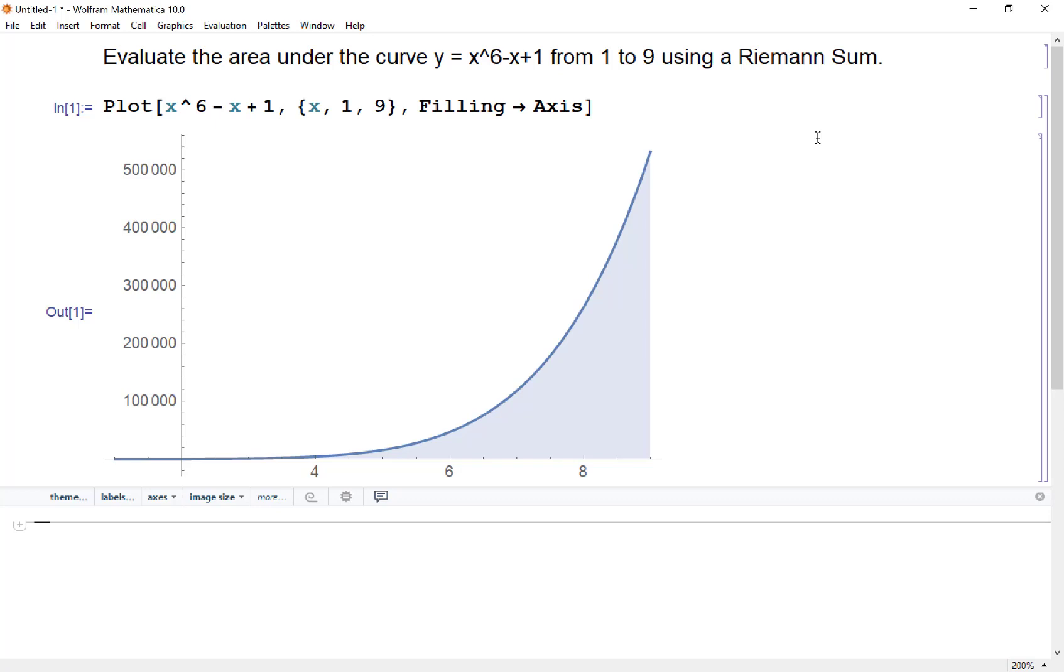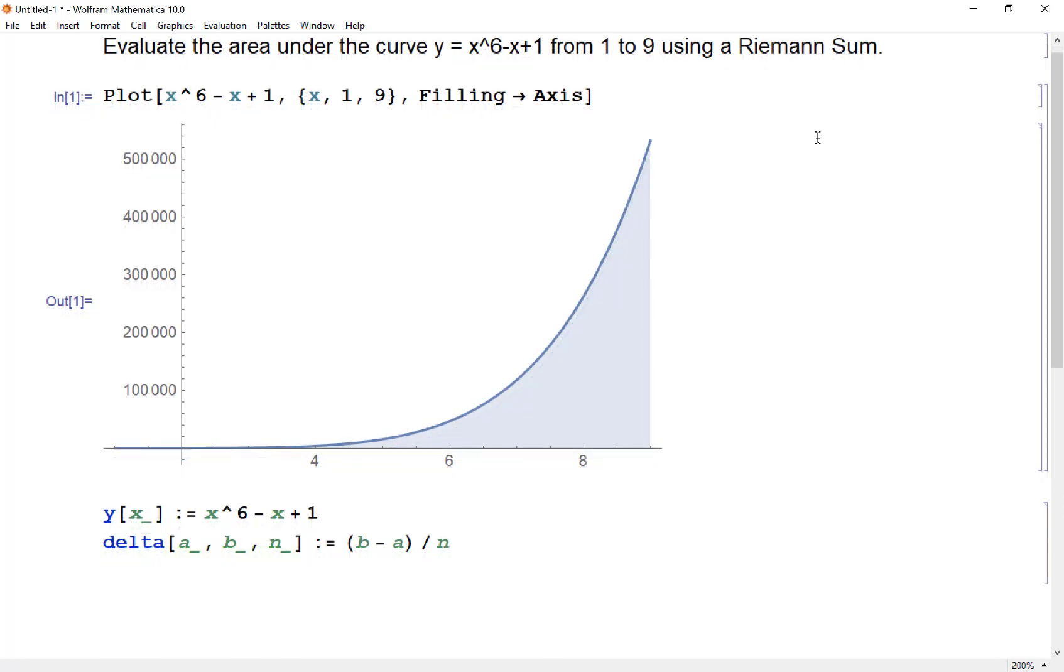We're going to let Mathematica handle this. So first thing we need to do is define our function, which I'm going to call y. We also need to characterize what I'm calling the delta function. For the delta function, we need to enter a start point in my interval, an endpoint my interval, and the number of rectangles we're going to use. And that by definition is going to be b minus a divided by n.